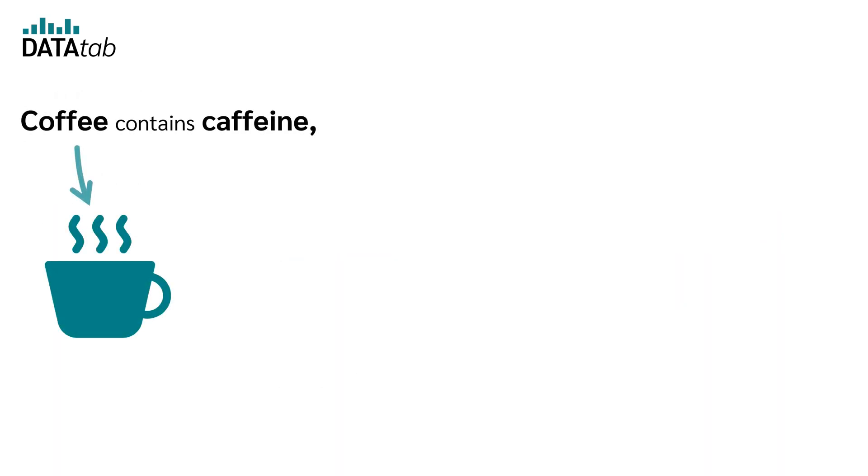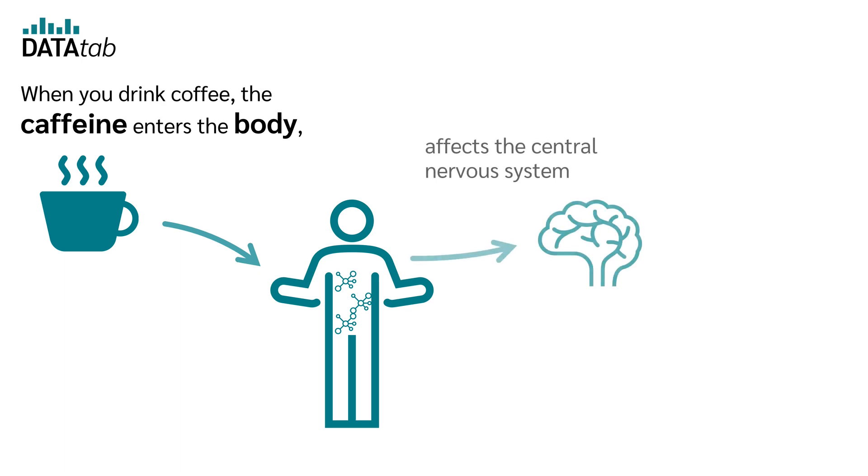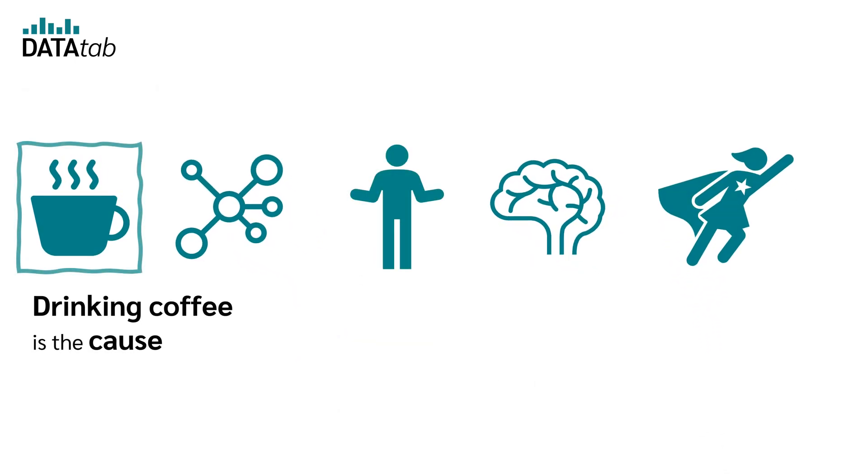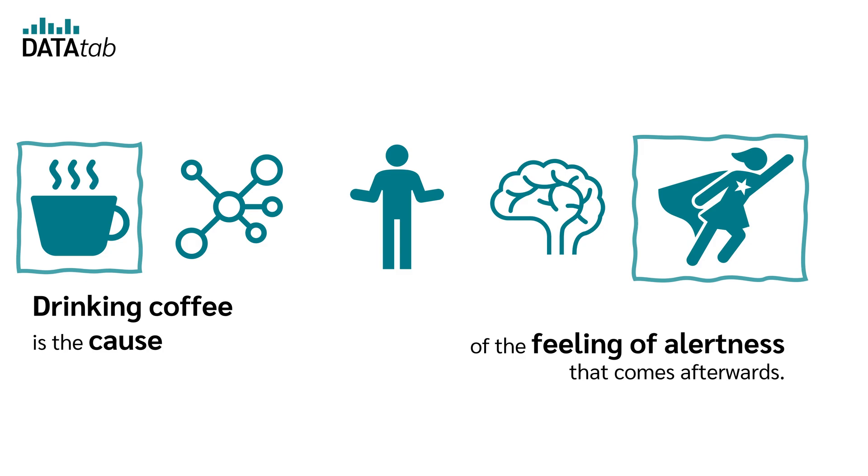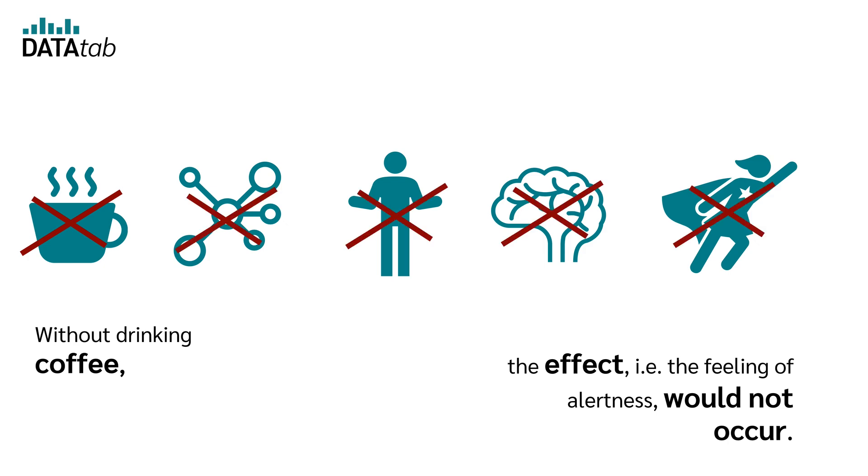An example. Coffee contains caffeine, a stimulating substance. When you drink coffee, the caffeine enters the body, affects the central nervous system and leads to increased alertedness. Drinking coffee is the cause of the feeling of alertedness that comes afterwards. Without drinking coffee, the effect, i.e. the feeling of alertedness, would not occur.